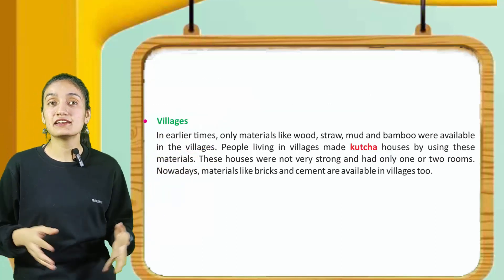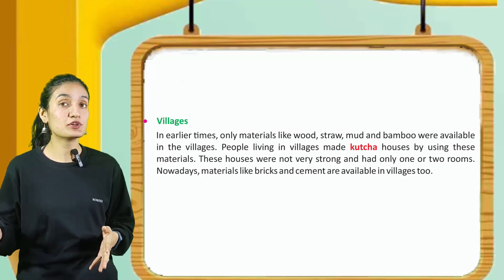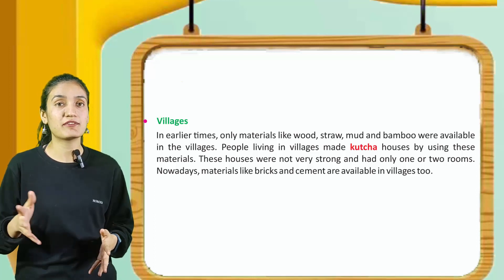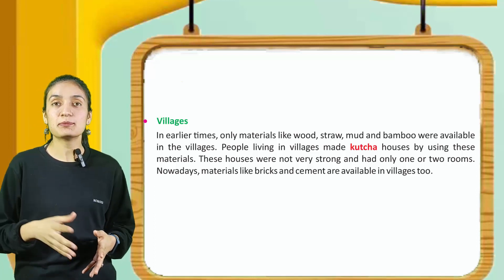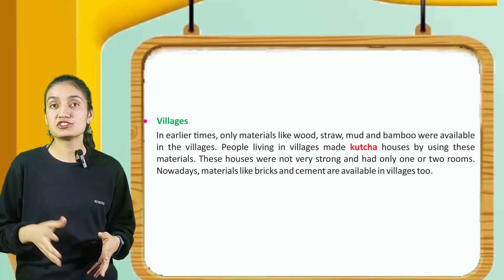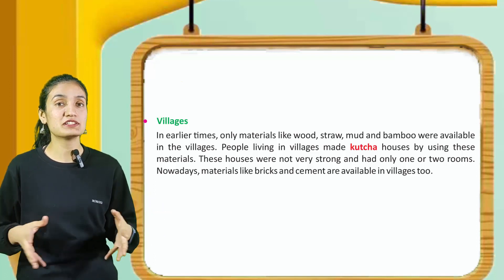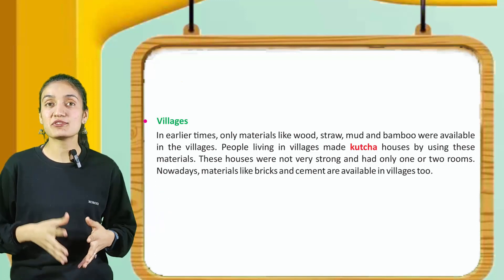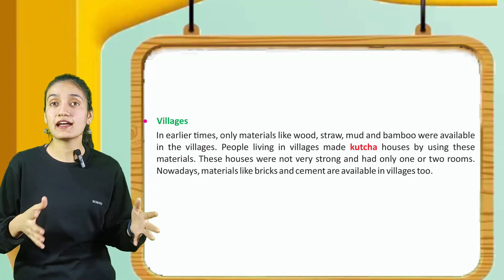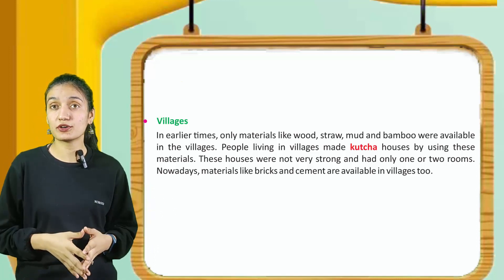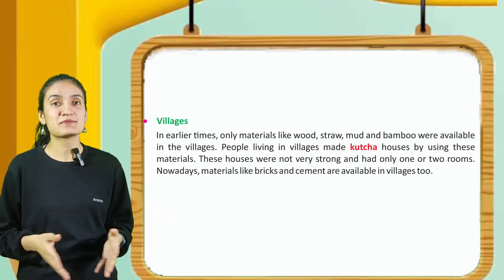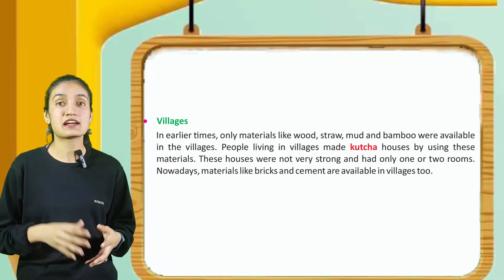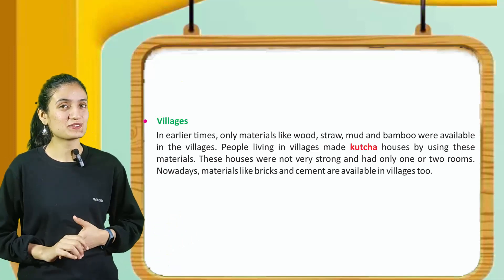In villages, in earlier times, only materials like wood, straw, mud and bamboo were available. People living in villages made katcha houses by using these materials. These houses were not very strong and had only one or two rooms. Nowadays, materials like bricks and cement are available in villages too.